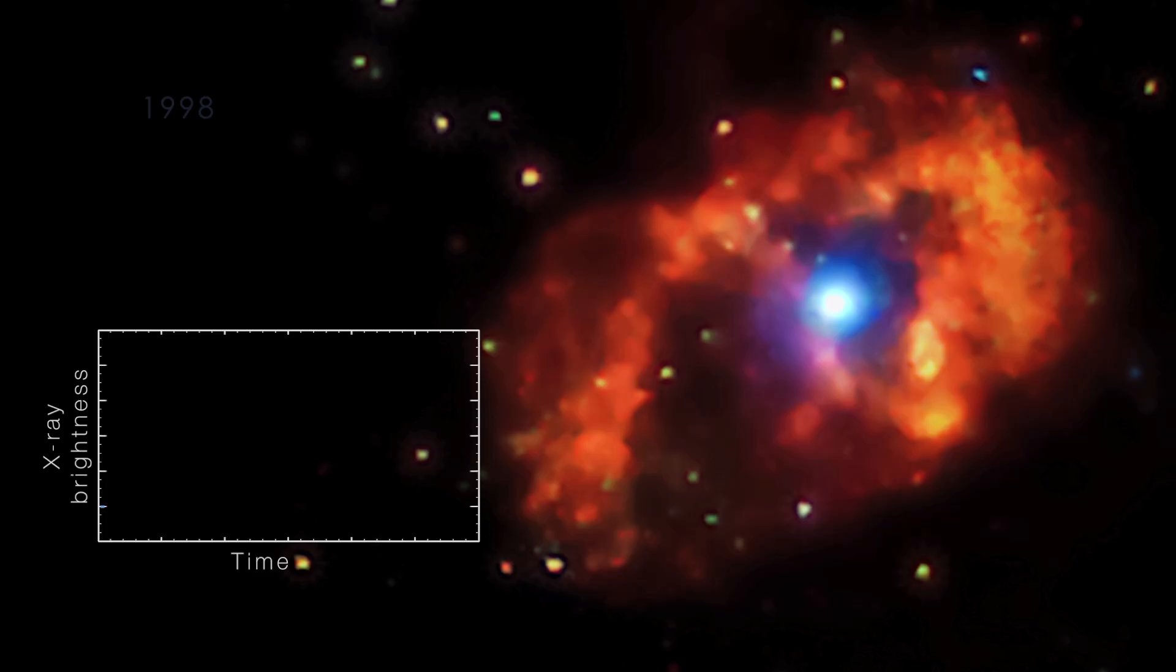Where the stellar winds collide, temperatures reach hundreds of millions of degrees, hot enough to emit X-rays. But the X-ray emission shuts down near periastron, when the smaller star is swallowed up by the dense wind of its larger companion.